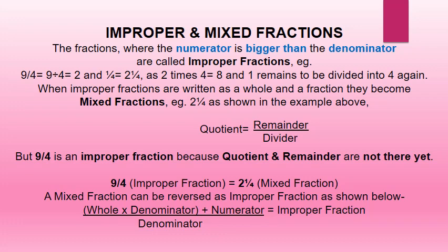Improper and mixed fractions. Fractions where the numerator is bigger than the denominator are called improper fractions. For example, in 9 upon 4, 9 is greater than the denominator 4. So 9 divided by 4 equals 2 remainder 1, giving 2 whole 1 upon 4, since 2 times 4 equals 8 and 1 remains.